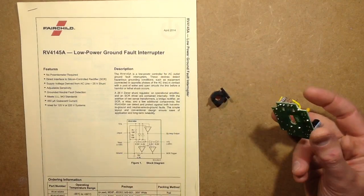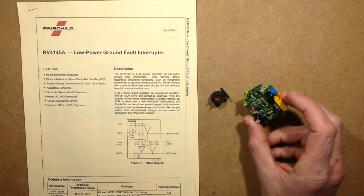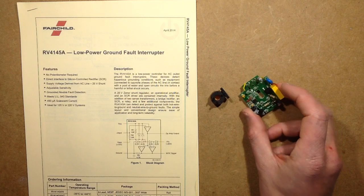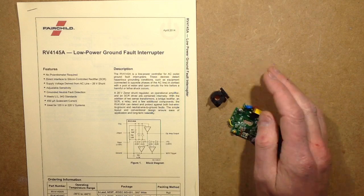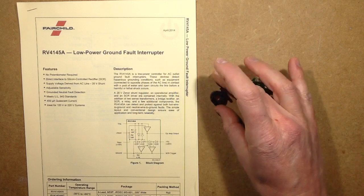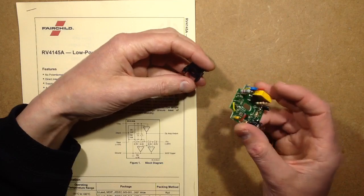This is the guts of the RCD, GFCI, GFI, whatever you want to call it, the residual current device, ground fault circuit interrupter. The little one I took to bits to actually show what the inside was and I was kind of intrigued because once I'd done the video I took it completely to bits.